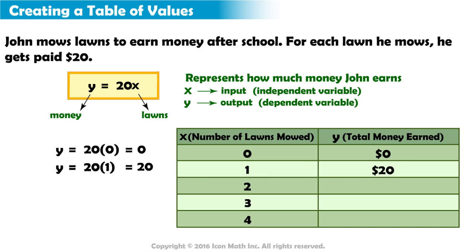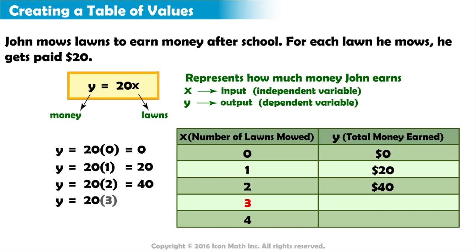If John mows 2 lawns, he will earn 20 multiplied by 2, or $40. For 3 lawns, John will earn 20 times 3, or $60.